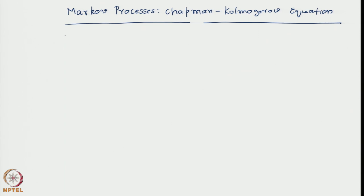This is perfectly valid — you can go on doing it from, say, the weather today to weather tomorrow, or from then on to weather the day after tomorrow, every time through a transition matrix for a single step. This is called the single-step-based marching, or single-step transition probability.